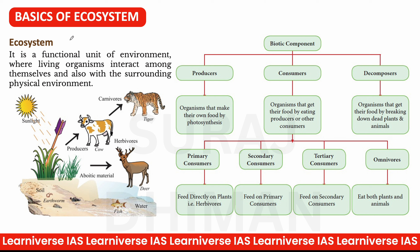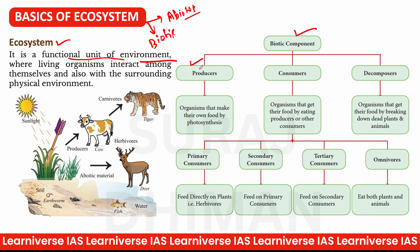Ecosystem is the functional unit — यानि practically हम animals और उनके environment के बीच interaction देख रहे हैं। इस ecosystem के भी दो components हैं — biotic component और abiotic component। Biotic components में सबसे पहला आता है producer।